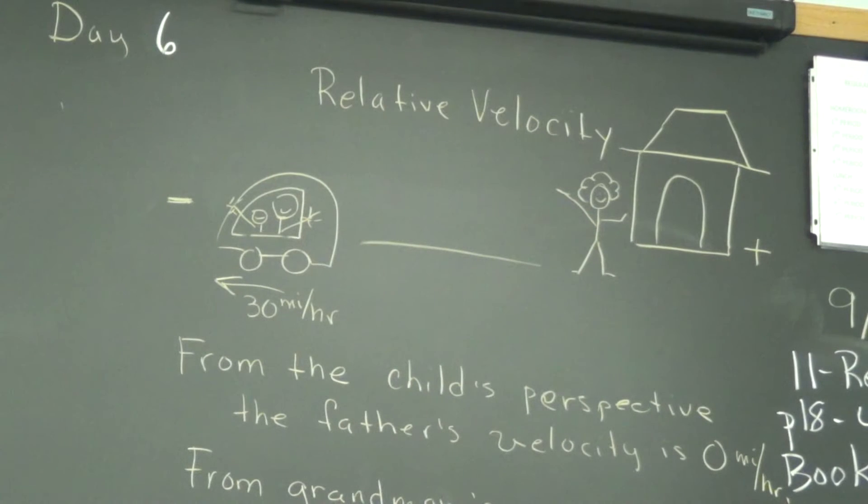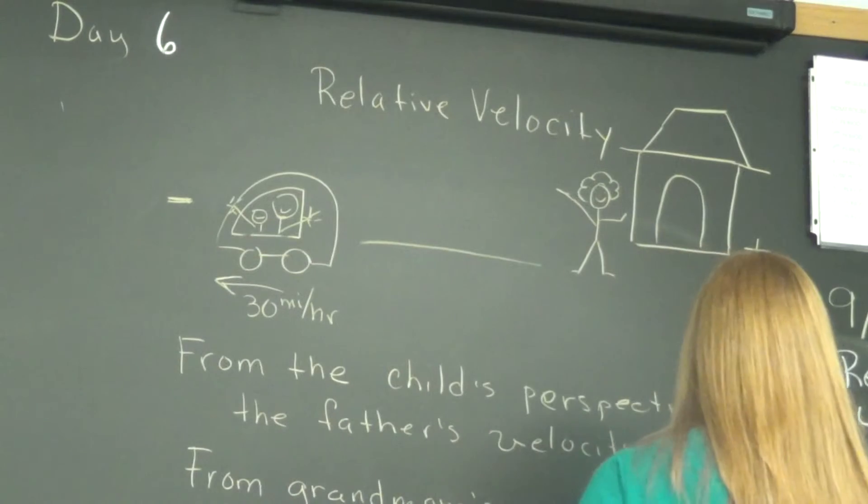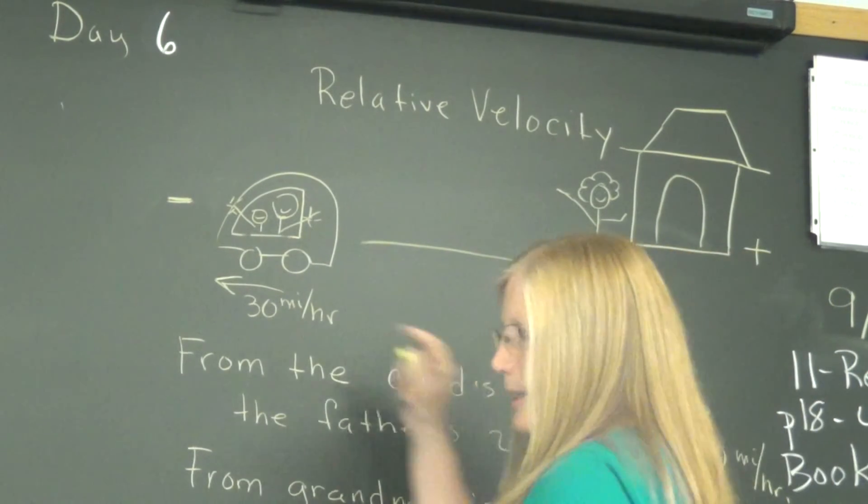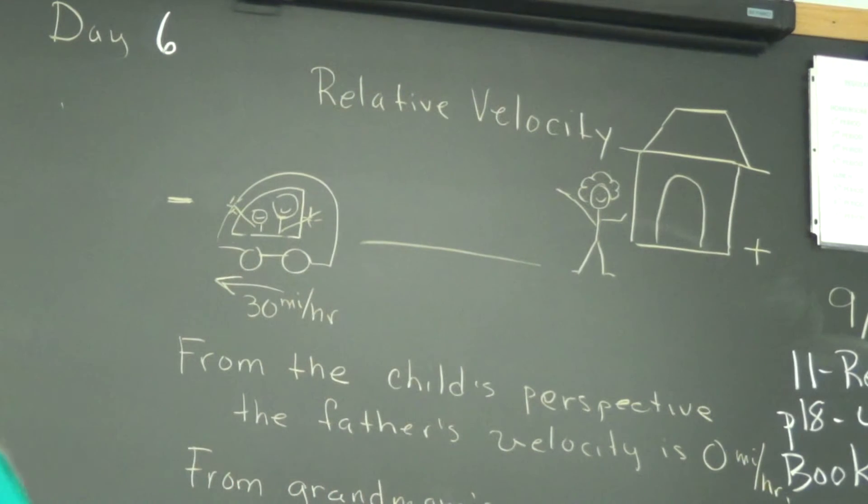So from Grandmom's perspective, what does it look like the father's velocity is? What do you think, Zach? 30 miles per hour. Except give me some direction. Negative. Negative 30 miles per hour. Negative just meaning they're heading out to the left on this road.